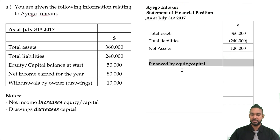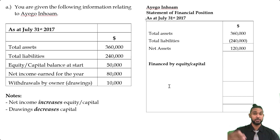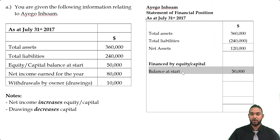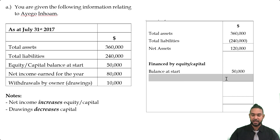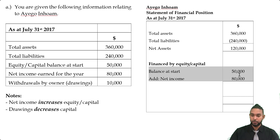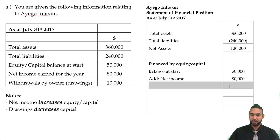Now we're going to talk about the capital section. How do we do this capital section? We start with the balance at start — that's a very good place to start. Now we have net income for the year. Why do people start a business? To make a profit. So when the business makes a profit, the profit goes to the owners. We add it here because profit increases capital — it increases the owner's investment. So you can put a little subtotal here, adding the 50 and the 80, giving us 130.